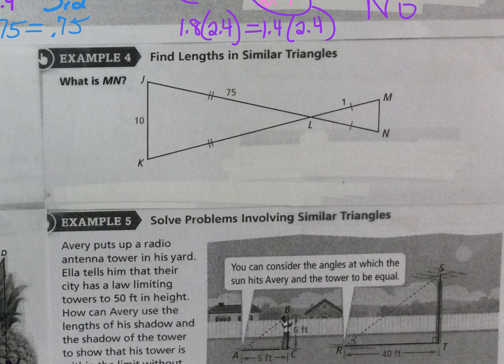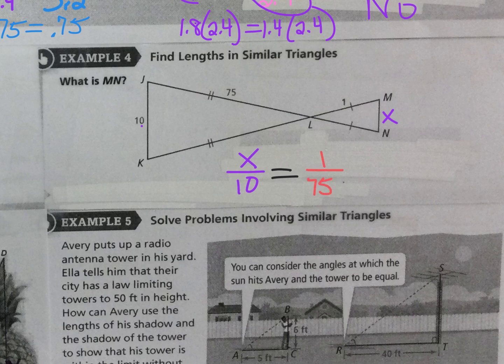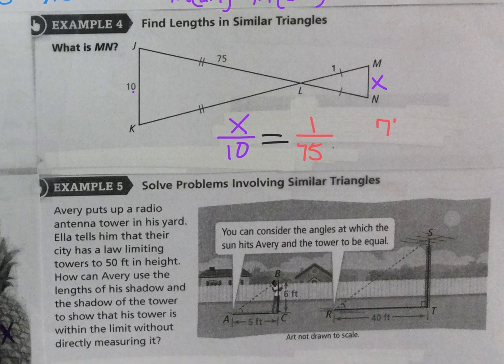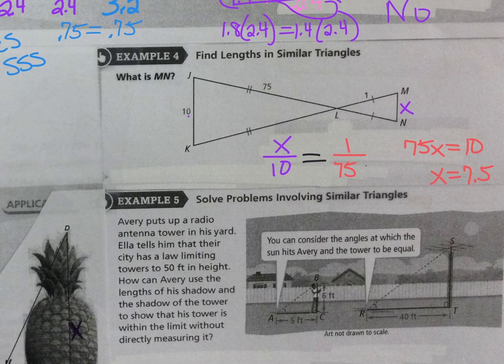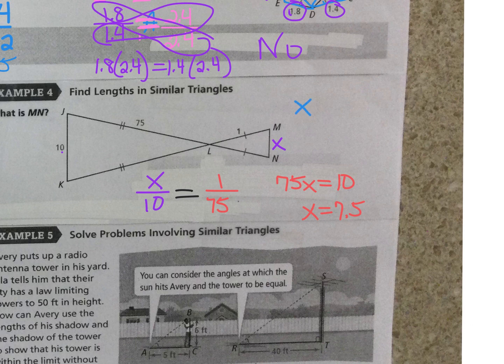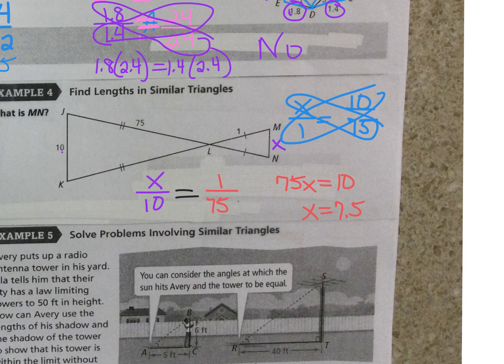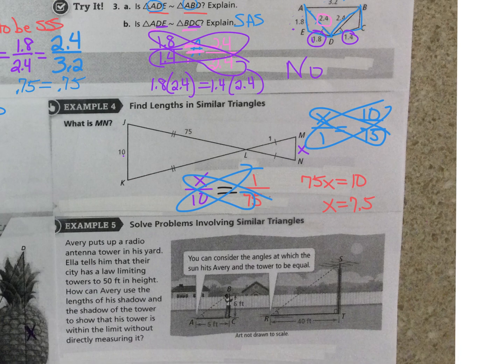So now what we're going to do is find MN, find X. So there's a lot of ways to set up proportions. So I'm going to say X, you could do it as X flat side is to flat side as slanted is to slanted, and then I cross multiply 75X equals 10. So X equals 7.5. Now you also could have said flat is to slant as flat is to slant. And if you see, your cross multiplication stays the same.